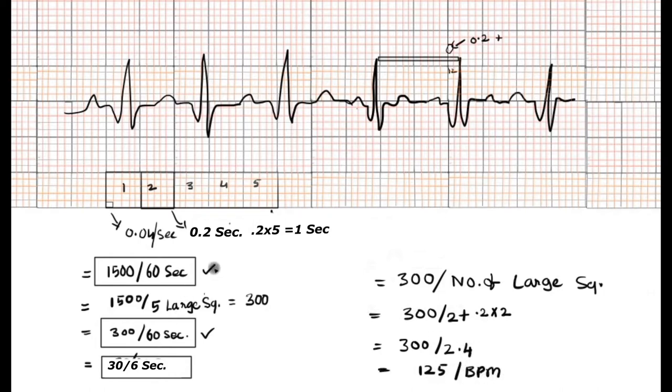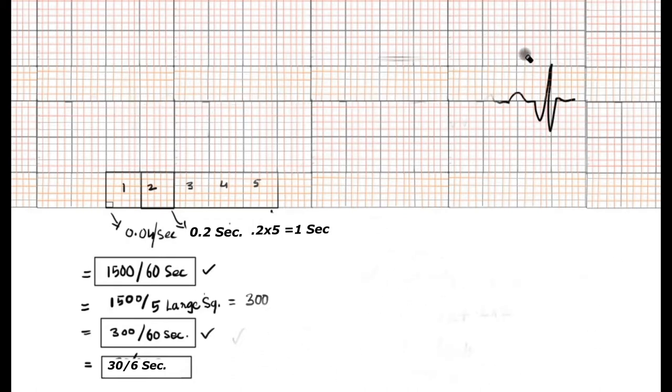In a second example, using 1500 divided by 12 small squares covered between two RR intervals. Using the same example, we get the same 125 beats per minute. This is one way of calculating heart rate.